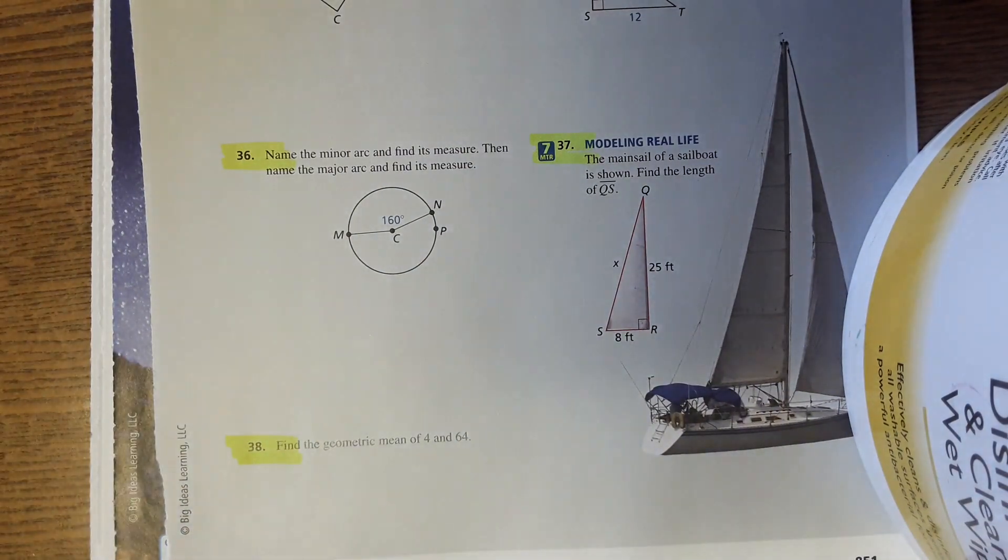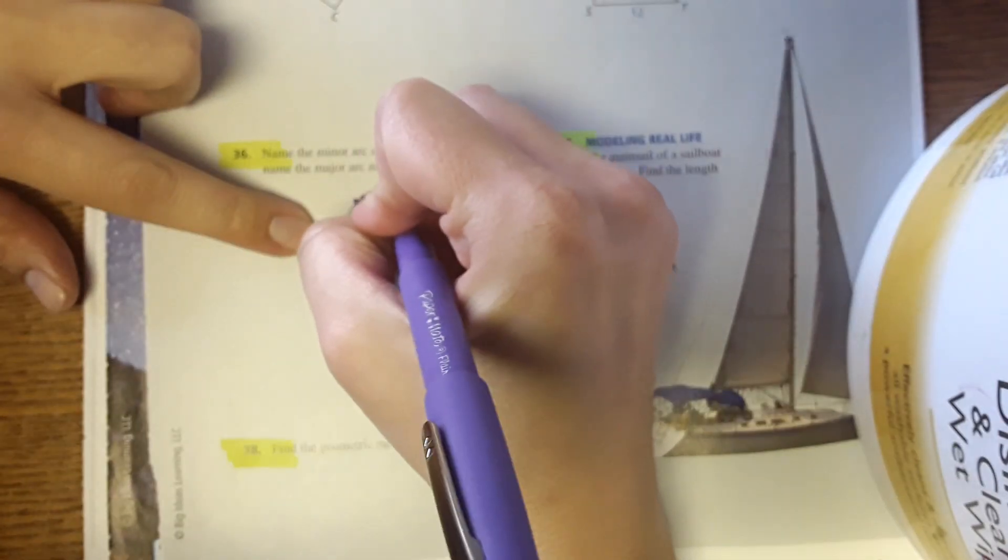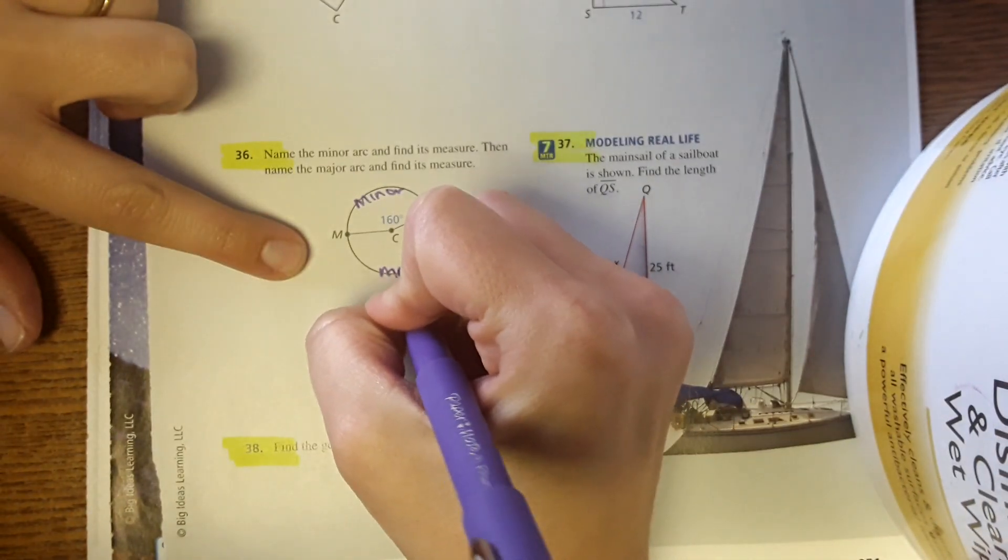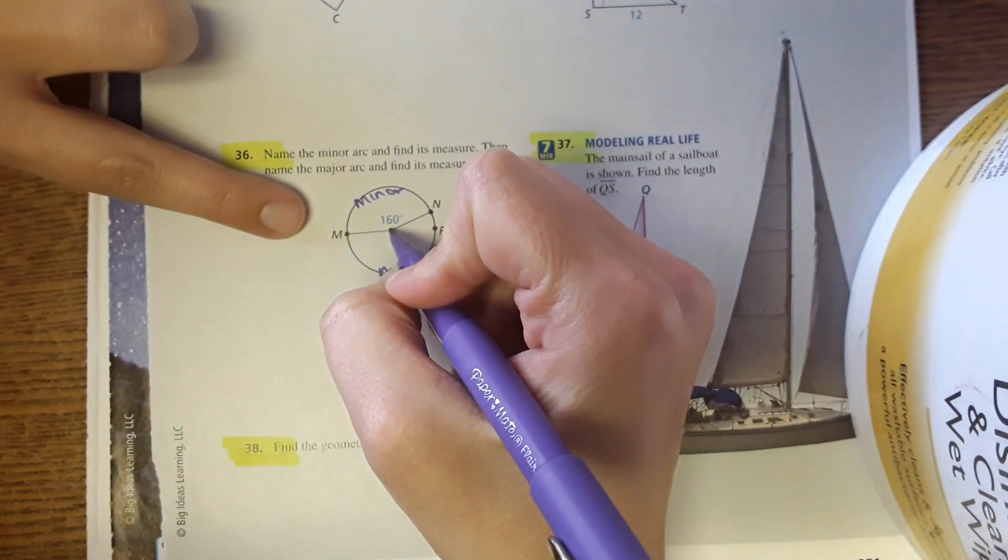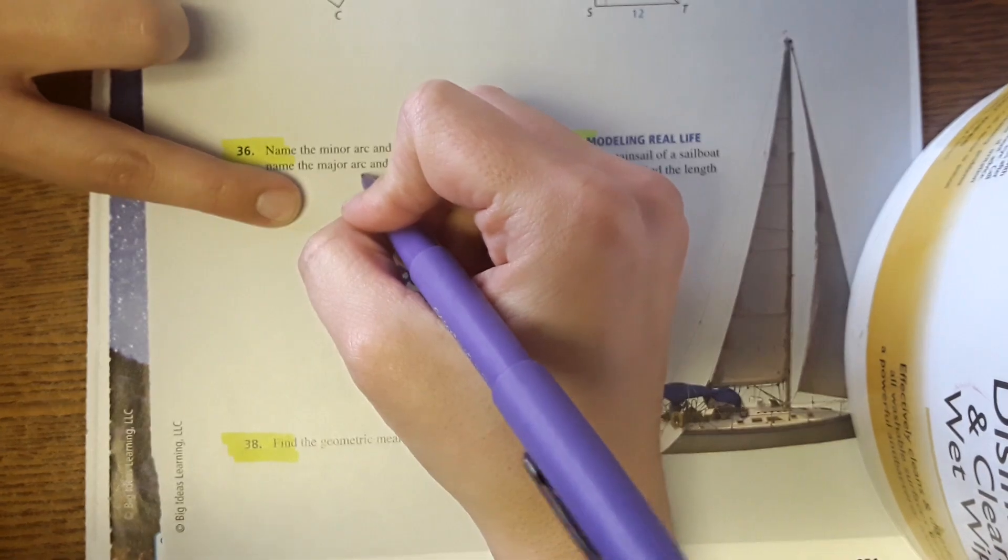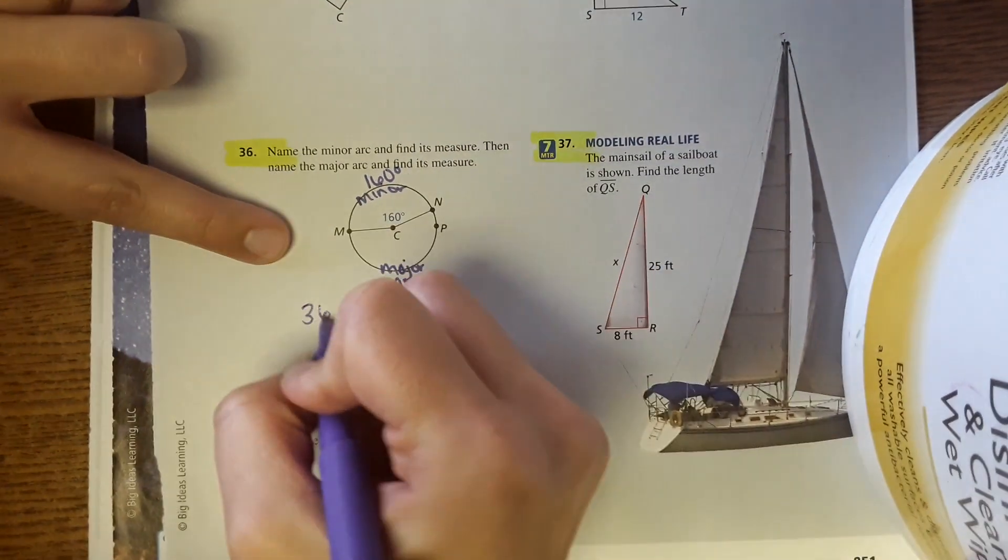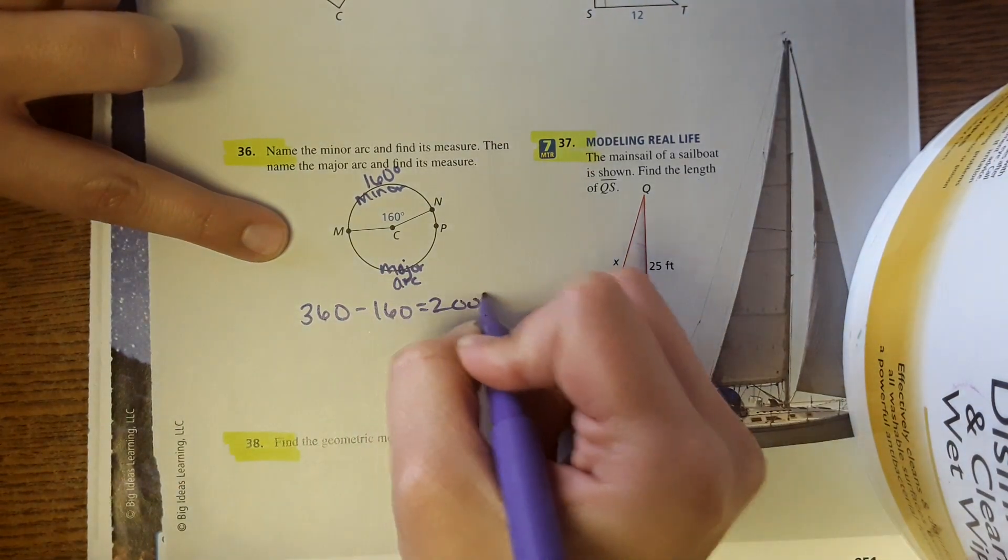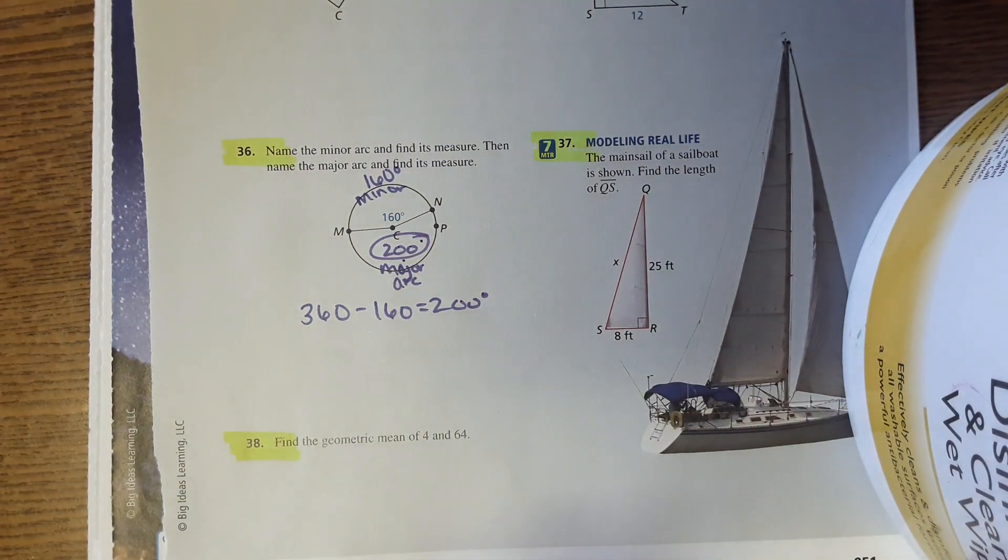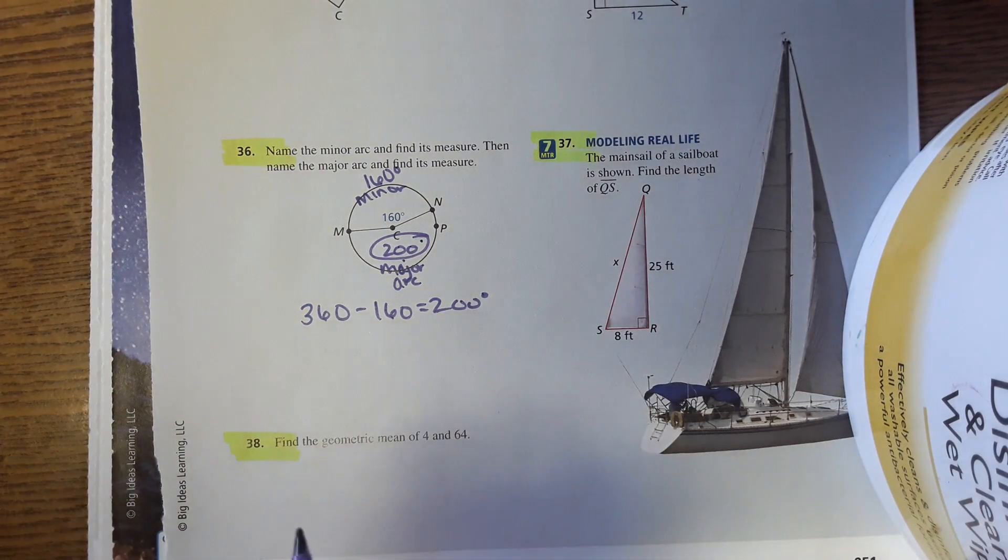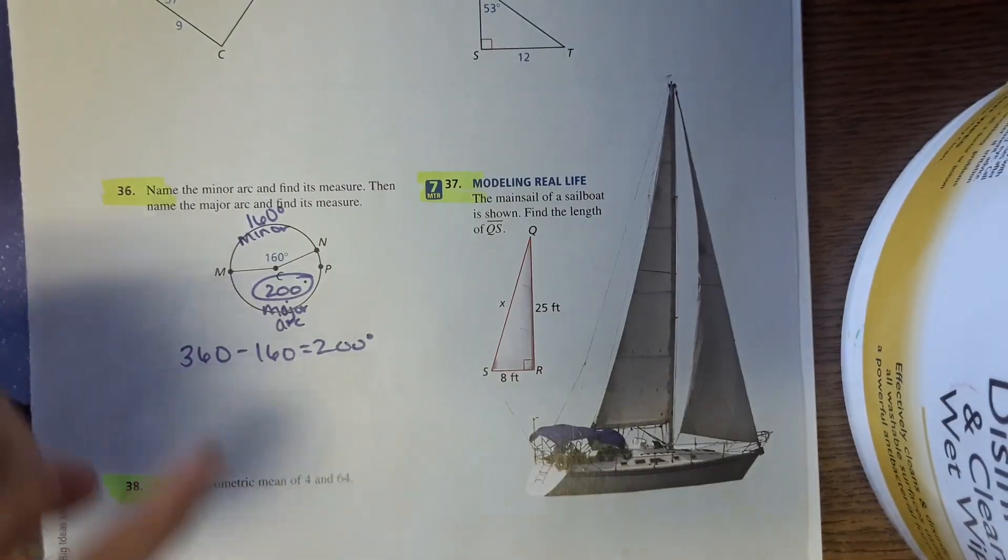It says name the minor arc, find its measure, then name the major arc and find its measure. So the minor arc would be right here and then this would be the major arc. From the central angle that's the same degree measure as the arc, this would be 160 degrees. And then to find this arc you could do 360 minus 160 to get 200 degrees. So 200 degrees is the major arc.